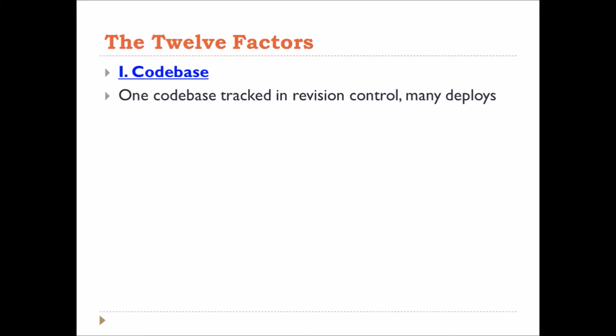The first factor is codebase. There should be only one codebase and it can be deployed many times, like a running instance of the app in dev, stage, or prod. This is a one-to-one core relationship between the codebase and the app. If there are multiple codebases, it is not an app, it's a distributed system. Multiple apps sharing the same code is a violation of twelve-factor.